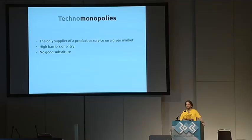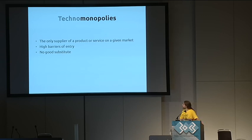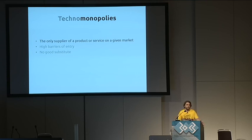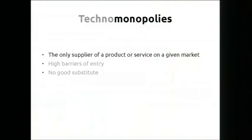So, techno is the simple part of this word — it's the part that didn't work for a few minutes. But what are monopolies? We all know what a monopoly is: you have either the only supplier of a product or service on a given market, high barriers of entry, or no good substitute. For example, in the 90s in Poland we had only one telephone company — Telekomunikacja Polska — and it was obviously a monopoly. That's no longer the case thanks to anti-monopoly laws.